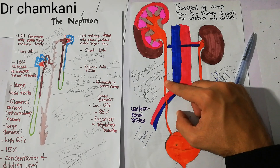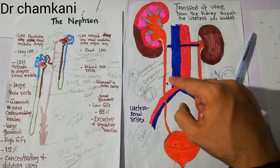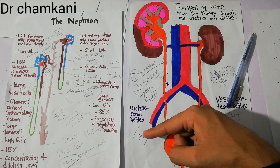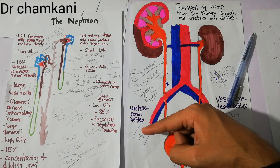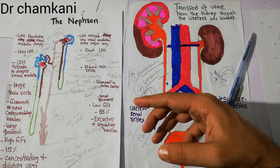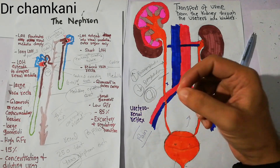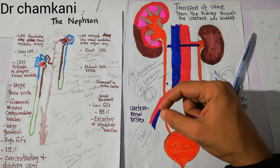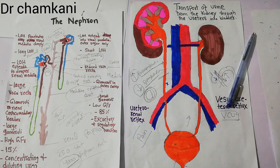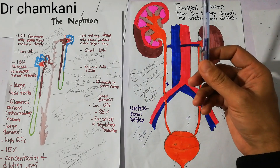When the ureter is blocked, there is intense constriction of the ureter to get rid of the blockage. Due to this constriction there is intense, severe pain, and due to this pain there is also constriction of the arterioles, so the blood supply to the nephrons decreases.